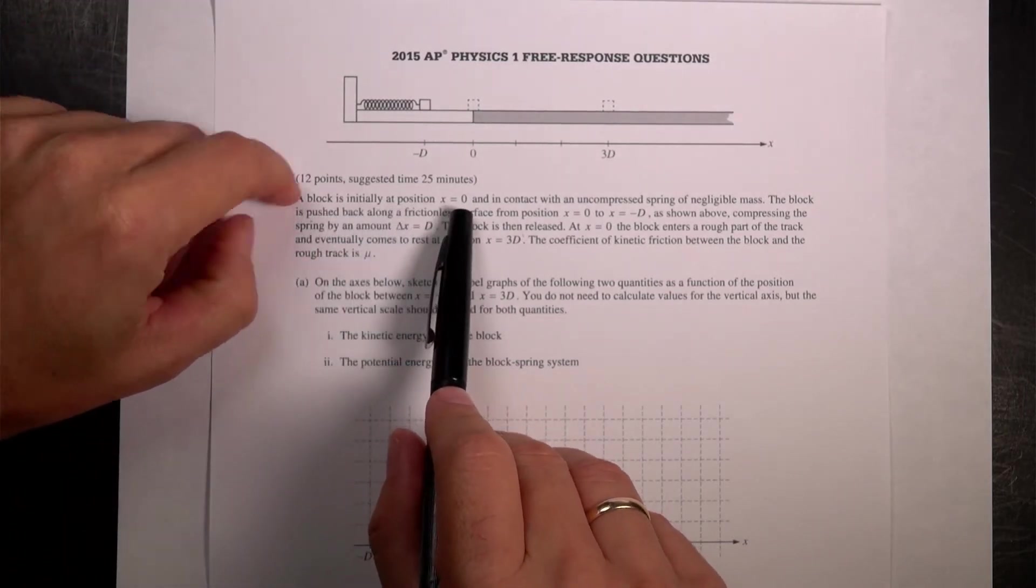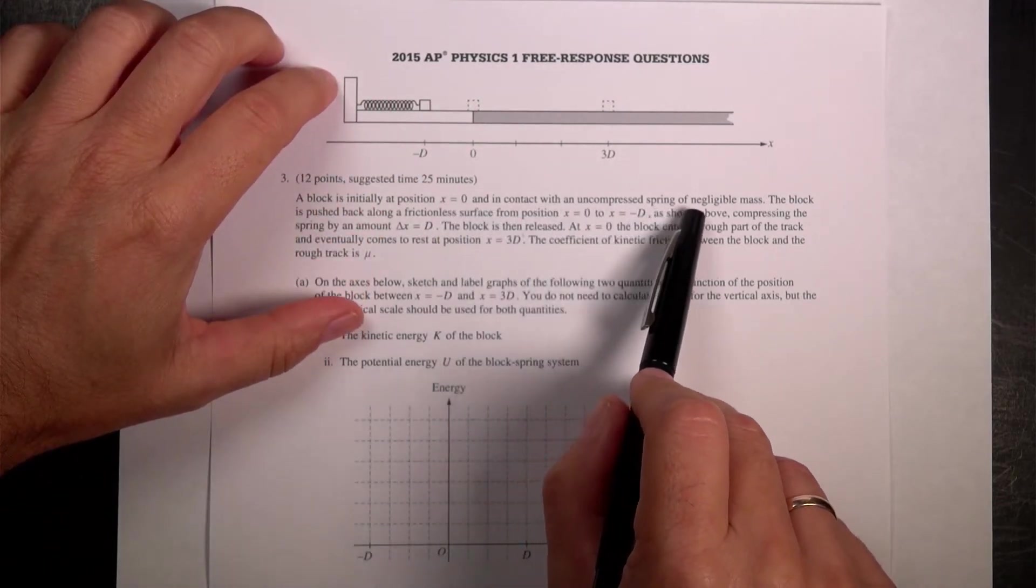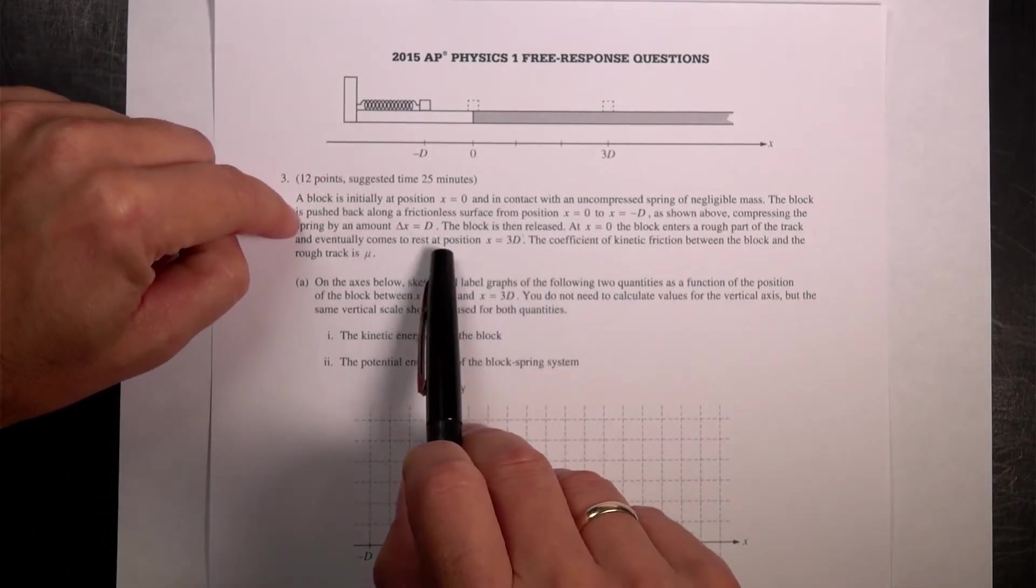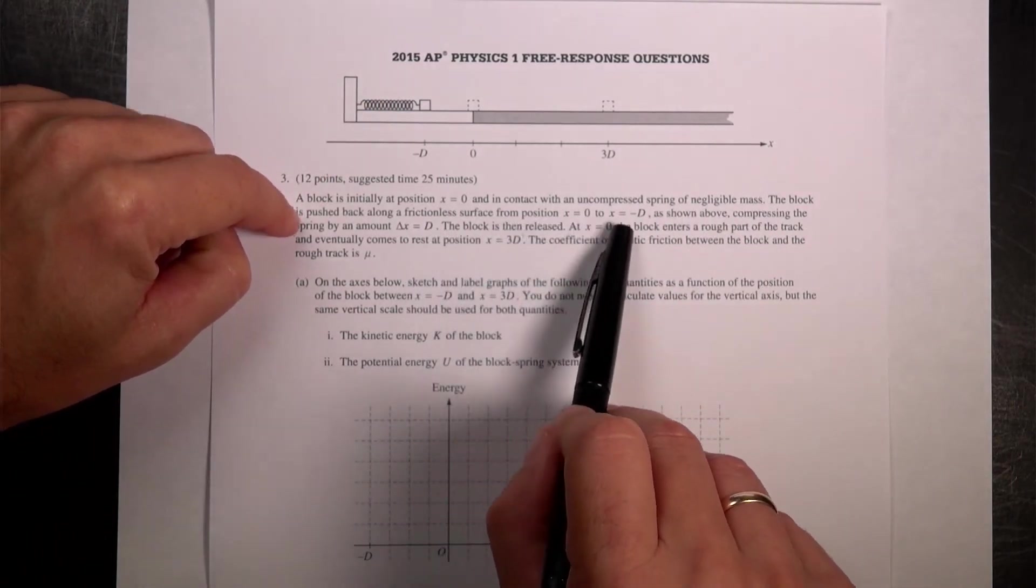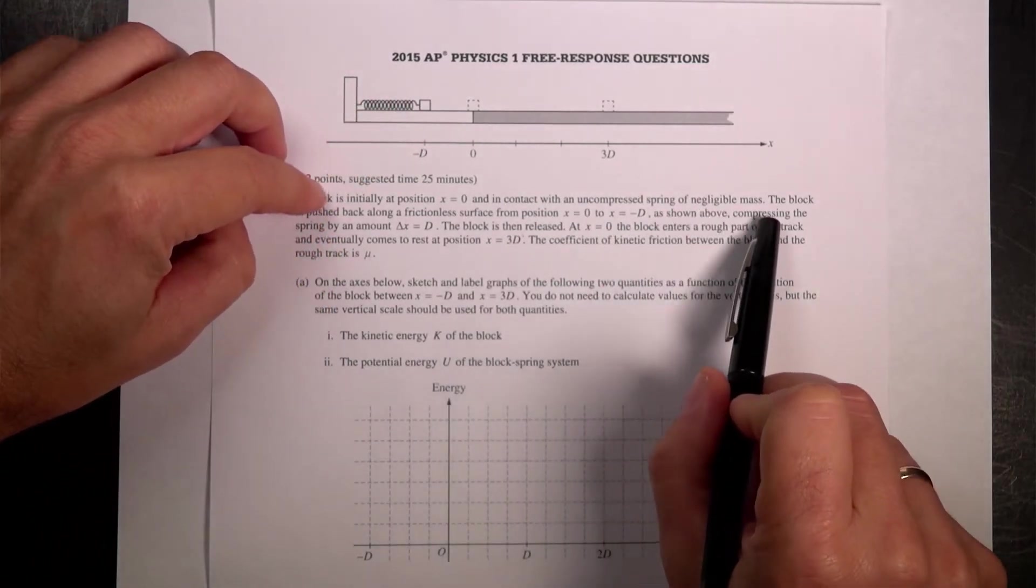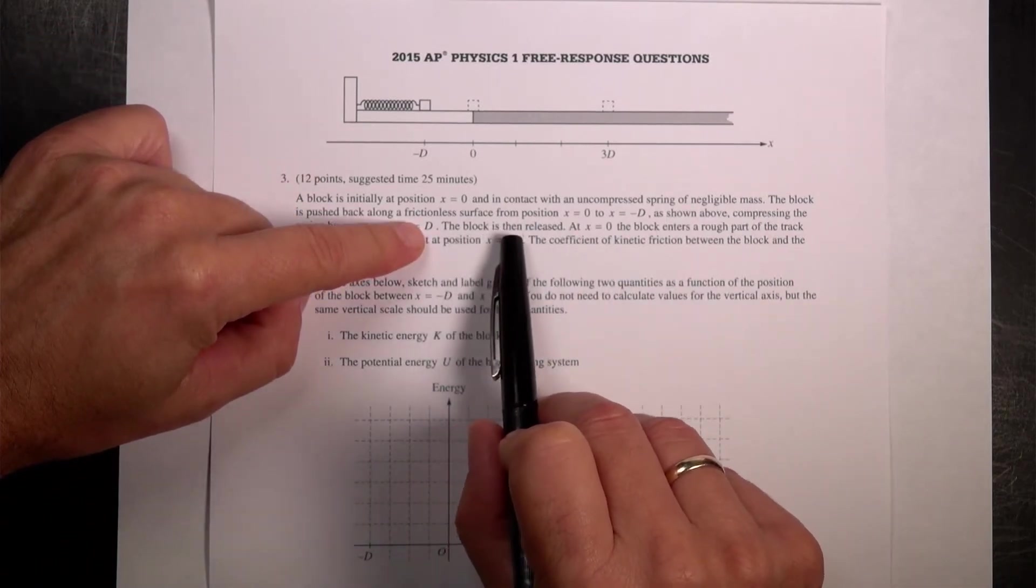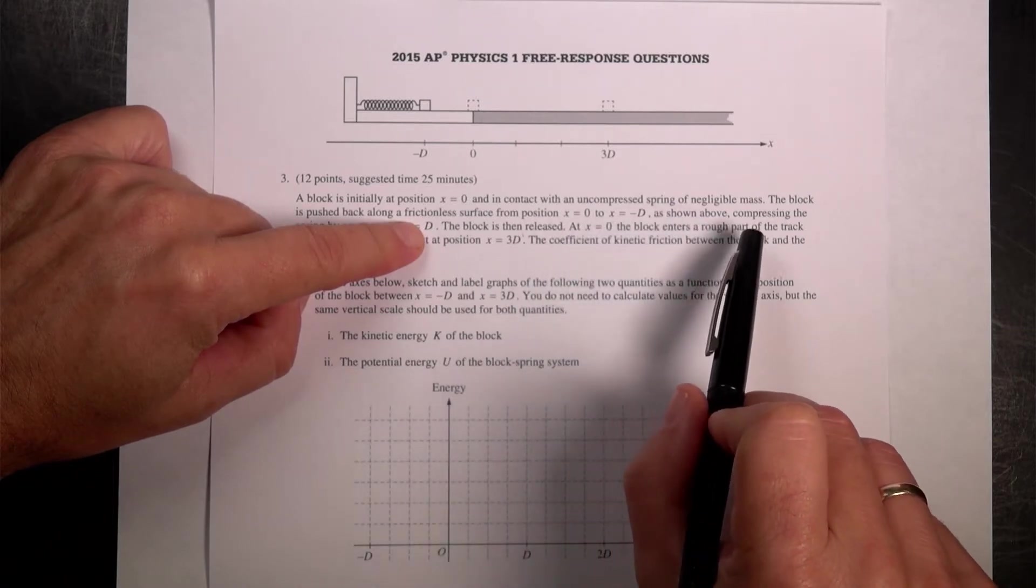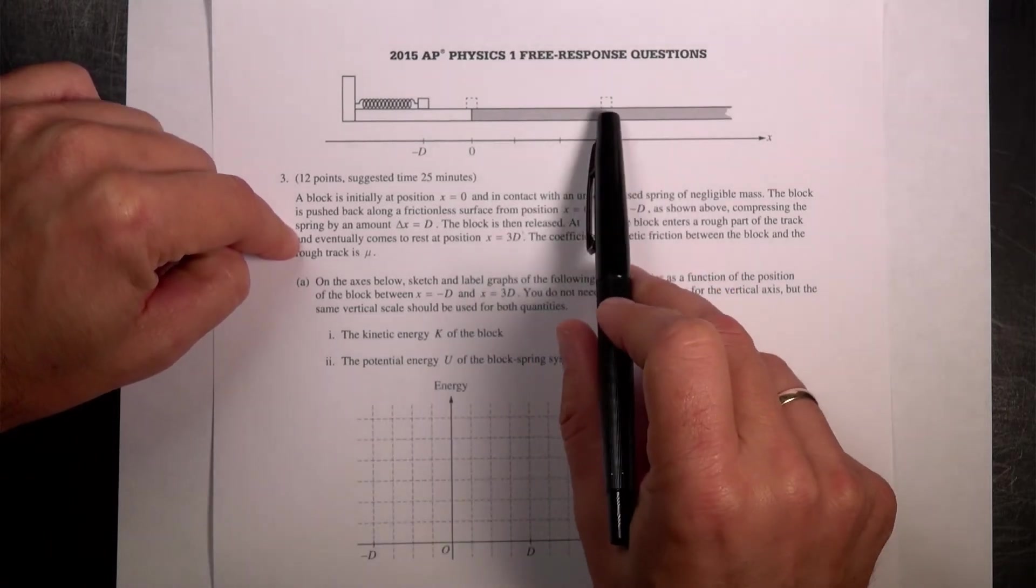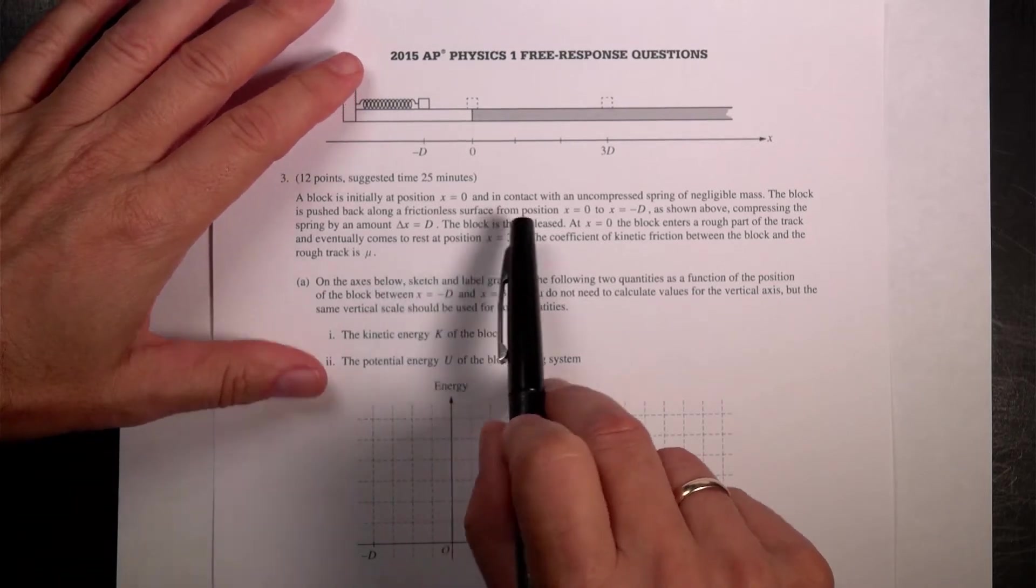A block initially at position x equals 0, I assume that's right there, in contact with an uncompressed spring of negligible mass. The block is pushed back along a frictional surface to x equals negative d, so right there, it's pushed back that way. As shown above, compressing the spring by amount delta x equals d. The block is then released at x equals 0. The block enters a rough part of the track and eventually comes to rest at x equals 3d. The coefficient of kinetic friction between the block and the track is mu.